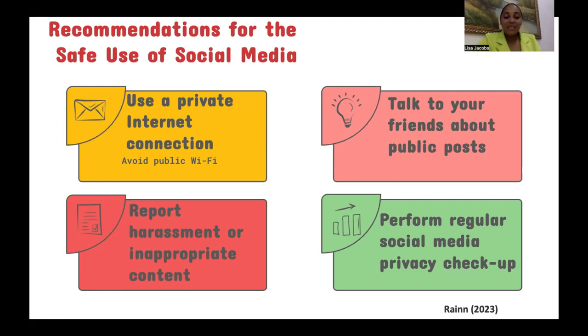In summary, RAIM in 2023 suggested other recommendations for the safe use of social media. You can use private internet connections and avoid public Wi-Fi. You should talk to friends about public posts, letting them know where you stand about sharing content that may include your personally identifiable information like your location, school, job, or even a photo of you at your home. Therefore, you can report harassment or inappropriate content, and make privacy a habit by doing a regular social media privacy checkup.